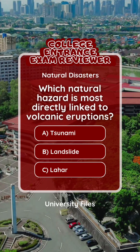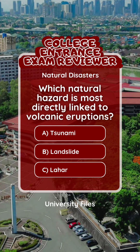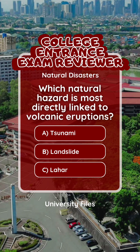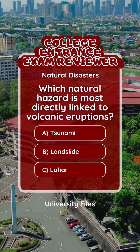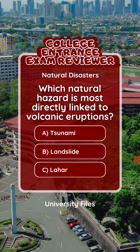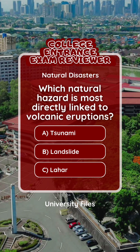Question 2. Natural disasters. Which natural hazard is most directly linked to volcanic eruptions? A. Tsunami. B. Landslide. C. Lahar.